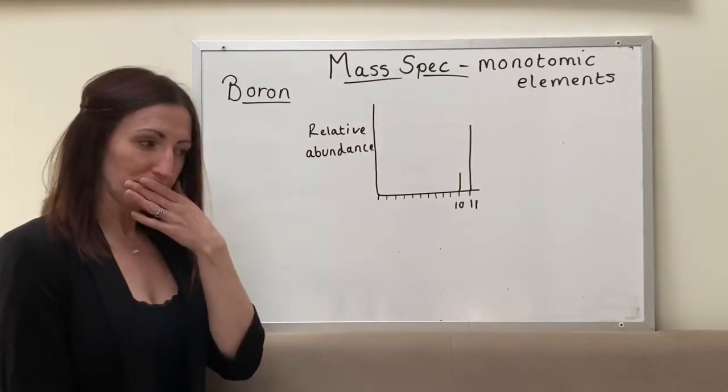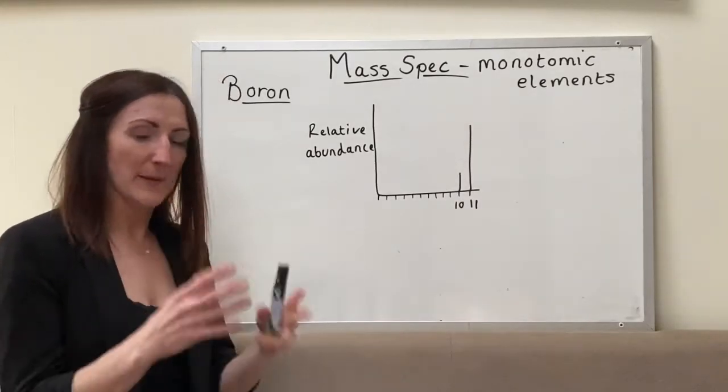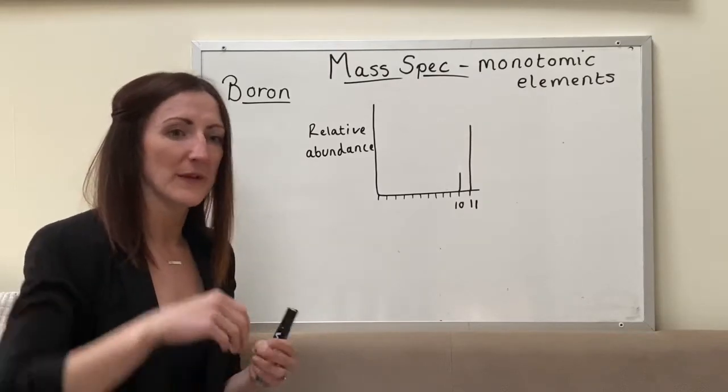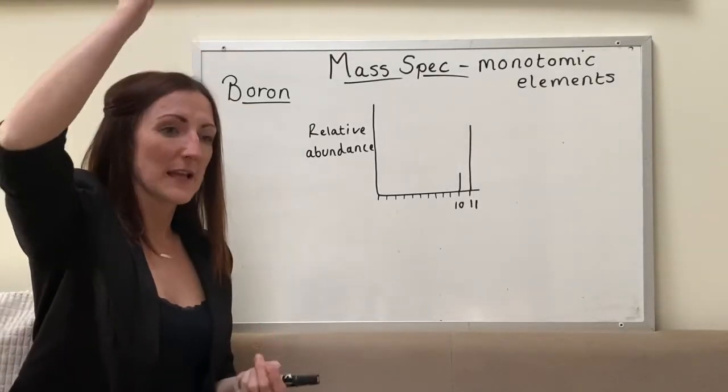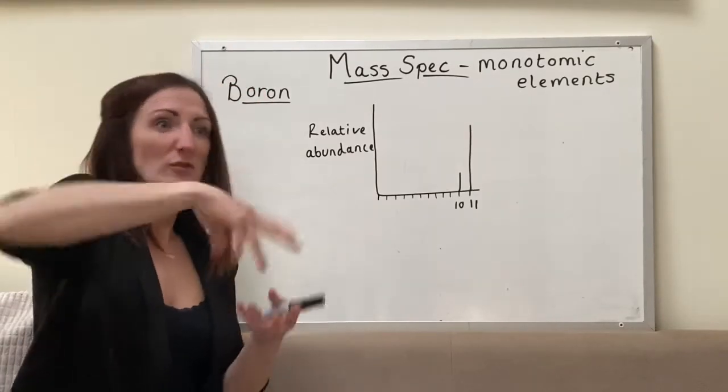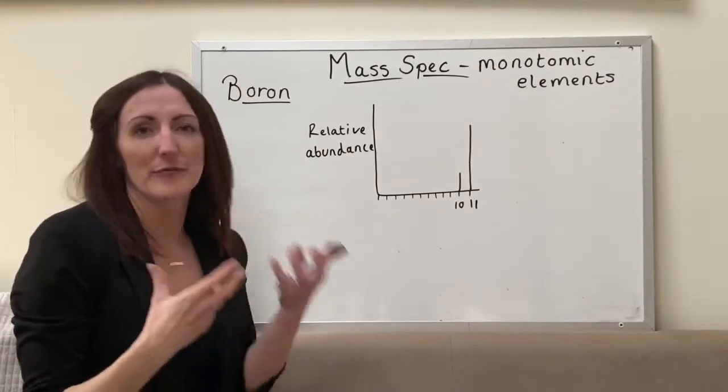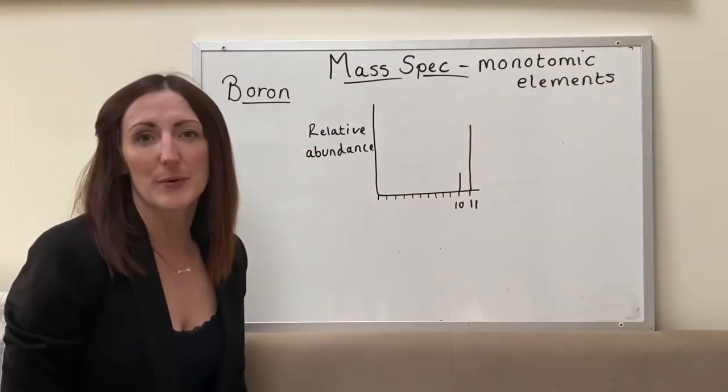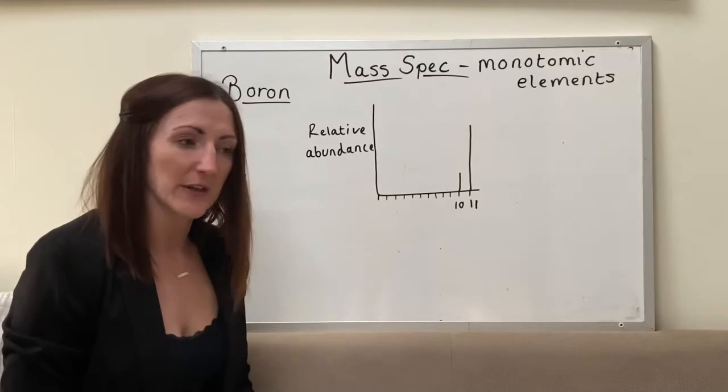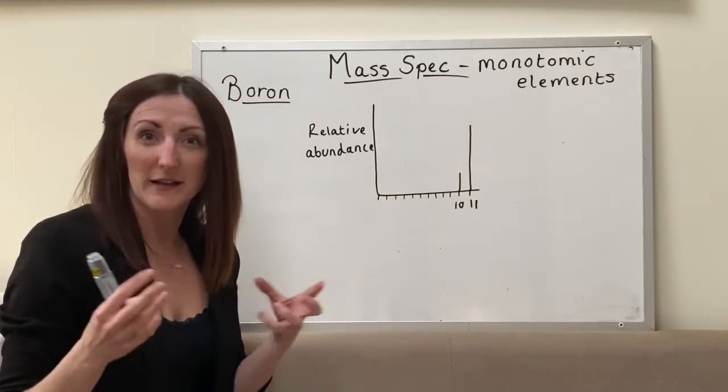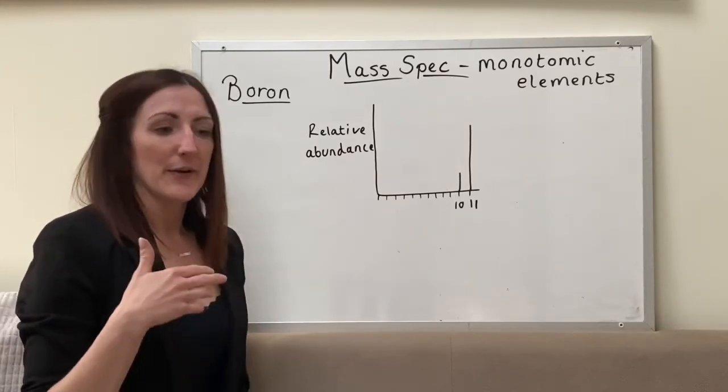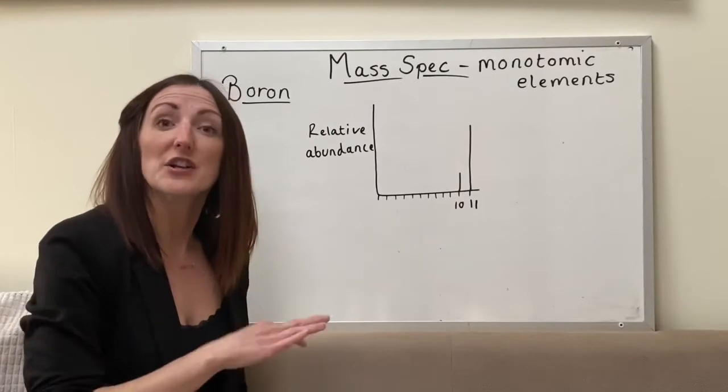So with a monatomic element, our mass spec basically just a sample gets injected and vaporized and it gets bombarded with this high-speed electron gun. This electron gun ionizes our sample because the electrons are so fast moving it knocks off an electron from whatever we've got. The reason we want them to be ionized is that only those that have become ions are actually going to be detected.